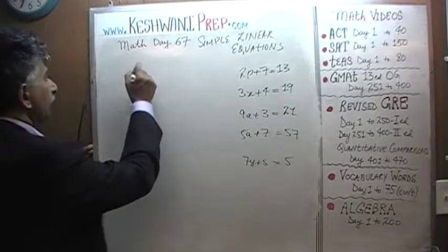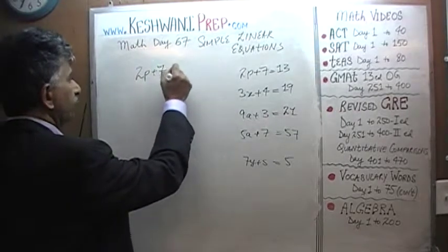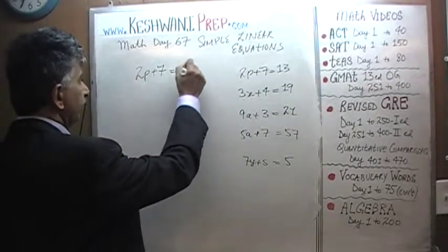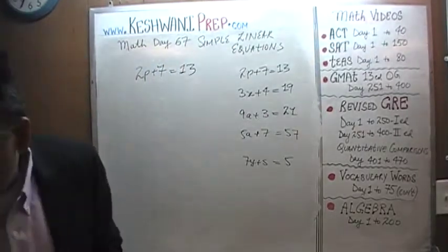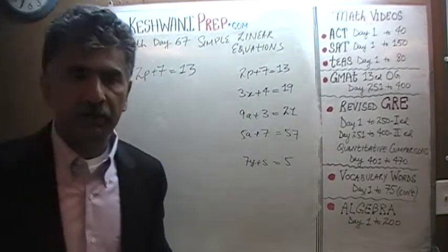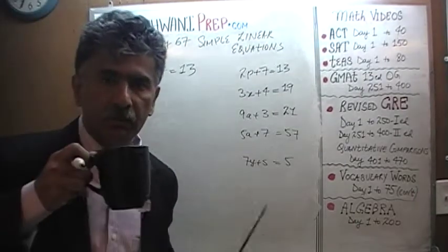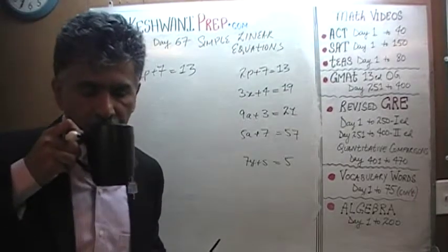Number one: 2p plus 7 equals 13. As I said, if you like, you can pause the video, do them yourself, and then compare your work against the work that we'll do together in a few seconds.